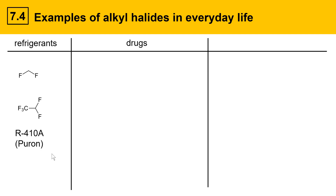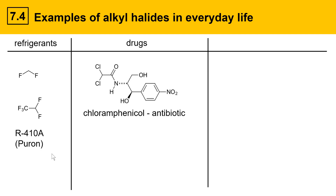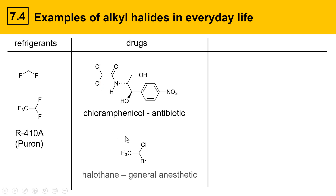Drugs also contain alkyl halides on occasion. Here's an example of an antibiotic: chloramphenicol. This is a broad-spectrum antibiotic and a complicated molecule, but on the left side there's an alkyl halide component to it. The molecule is multifunctional, but the alkyl halide part is one part of it. Here's another drug called halothane, which is a general anesthetic and is completely alkyl halide-based — it contains fluorines, a chlorine, and a bromine.